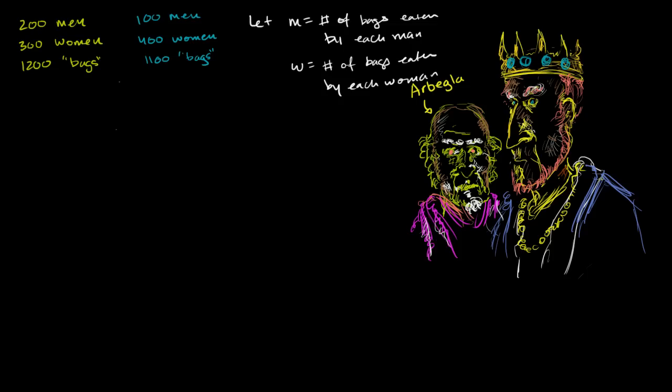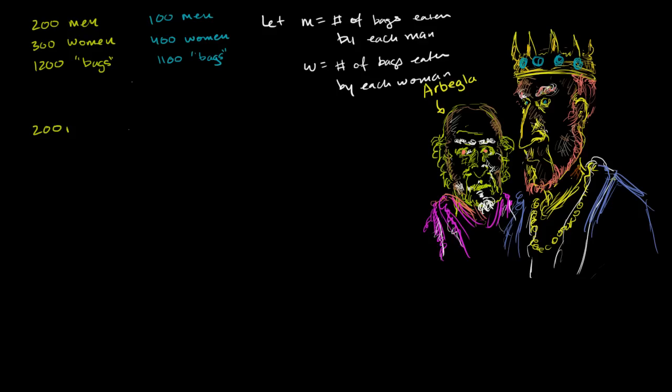And so with these definitions of our variables, let's think about how we can represent this first piece of information, this piece of information in green. Well, let's think about the total number of bags that the men ate. You had 200 men, let me scroll over a little bit. You had 200 men, and they each ate M bags, M bags per man. So the men at this first party collectively ate 200 times M bags. If M is 10 bags per man, then this would be 2,000. If M was 5 bags per man, then this would be 5,000. We don't know what M is, but 200 times M is the total eaten by the men. Same logic, total eaten by the women is 300 women times the number of bags eaten by each woman. And so if you add the total eaten by the men and the women, you get the 1,200 bags.